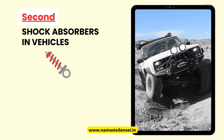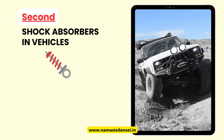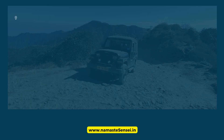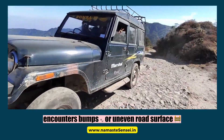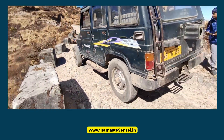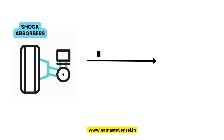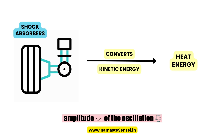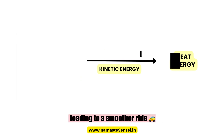Second, Shock Absorbers in Vehicles. Shock absorbers are crucial components in vehicles, designed to dampen the oscillations of the suspension system. When a vehicle encounters bumps or uneven road surfaces, its suspension system undergoes oscillation. The shock absorbers work by converting the kinetic energy of the bouncing suspension into heat energy, thereby controlling and reducing the amplitude of the oscillation, leading to a smoother ride.